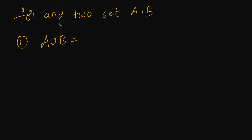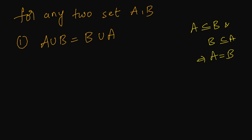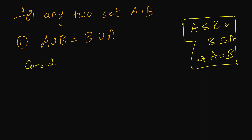The first commutative law states: A union B equals B union A. For proving this, I will be using the property of equality of two sets. When can I say two sets are equal? If A is a subset of B and B is a subset of A, then I can say A must be equal to B. This is the equality of sets property.